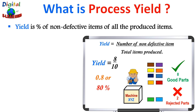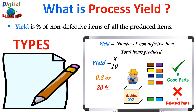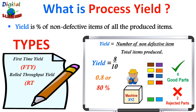Yield is eighty percent. Yield is normally of three types: first time yield (FTY), rolled throughput yield (RTY), and first pass yield (FPY). Let us understand all three one by one with the help of animated examples.